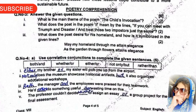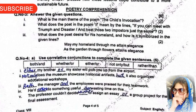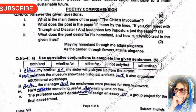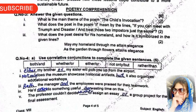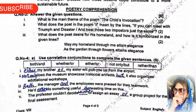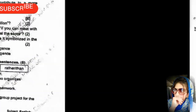Question number four: use correlative conjunctions to complete the given sentences. The options provided are: both/and, whether/or, either/or, not only/but, rather/than. The answers are: first — 'either my brother or my sister'; second — 'not only does the museum showcase historical aircraft, but it also organizes educational workshops'; third — 'both the manager and the employee were praised for their teamwork'; fourth — 'he would rather do something useful than wasting time'; fifth — 'the professors couldn't decide whether to assign an essay or a group project for the final assessment'.